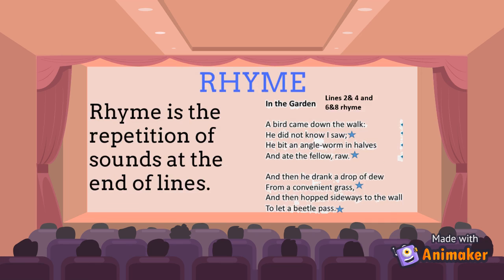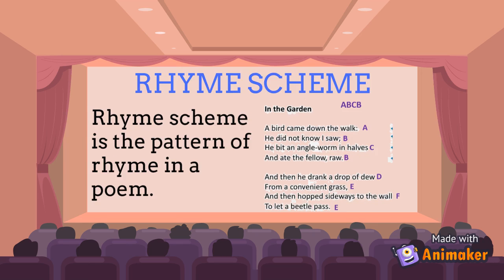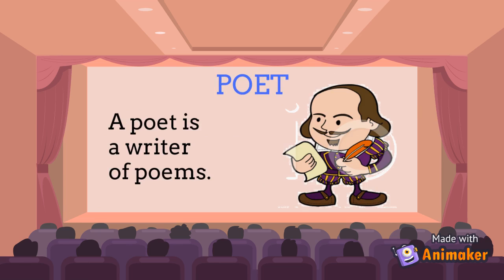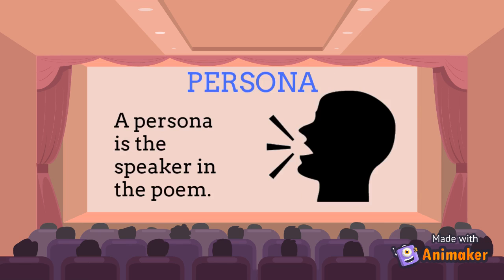Rhyme: the repetition of sounds at the end of lines. Rhyme scheme: the pattern of rhyme in a poem. Poet: the writer of a poem. Persona: the person speaking in the poem.